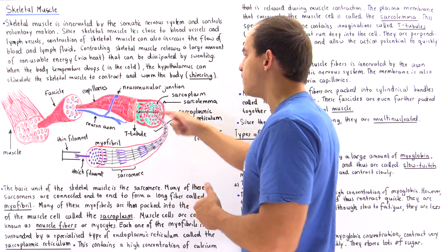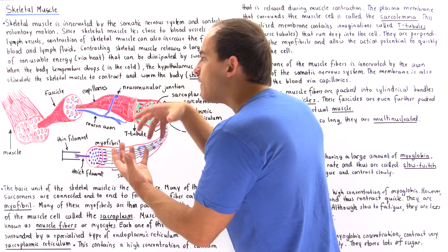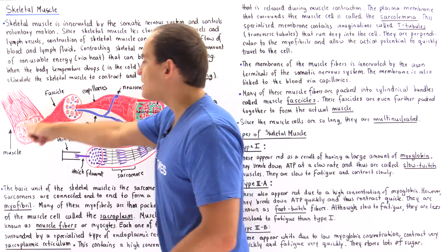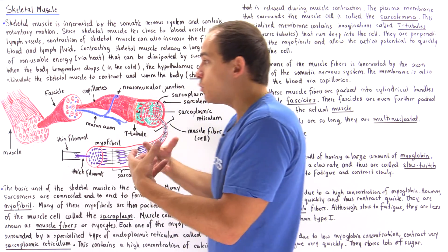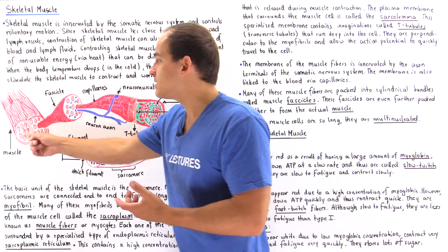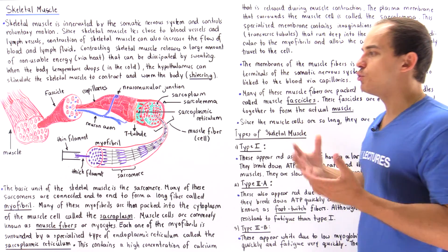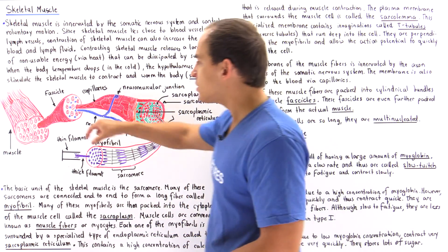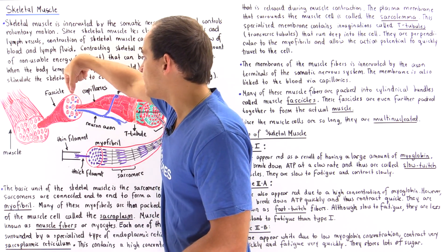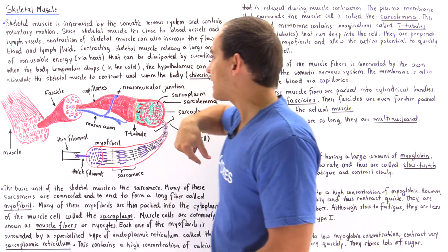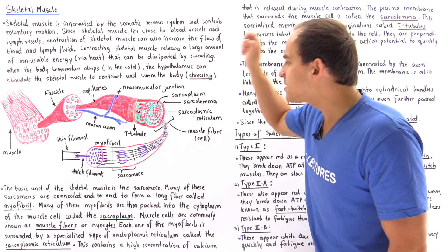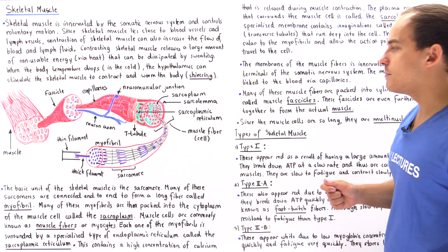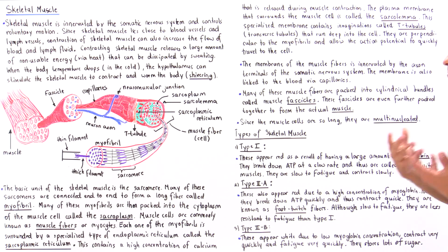A fascicle consists of many of these muscle cells, and these fascicles are further bundled together to form the actual muscle we can see on the macroscopic level — the muscle visible without a microscope. So the muscle consists of many divisions: inside the muscle we have fascicles, fascicles contain muscle cells, and muscle cells contain myofibrils composed of sarcomere subunits — the sarcomere building blocks.